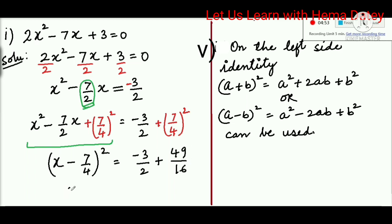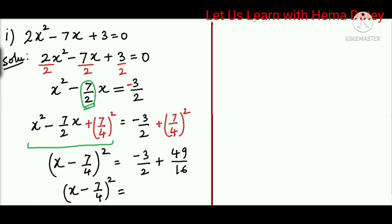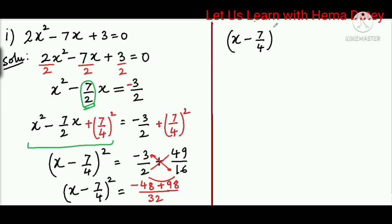In the next step, we write (x - 7/4)² = and simplify the right-hand side. We multiply the denominators 2 and 16 to get 32. To get the numerator, we cross-multiply: -3 × 16 gives -48, and 49 × 2 gives 98. So the left-hand side is (x - 7/4)² and the right-hand side is (-48 + 98) = 50/32.